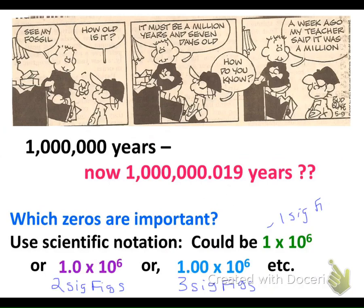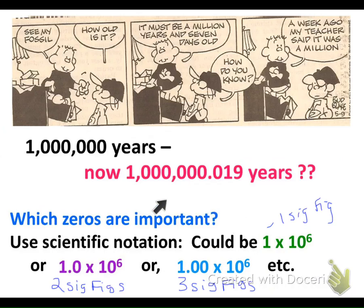If I were to use scientific notation, there are a lot of different ways. One representation would be two significant digits. Another would be considered three significant digits because the decimal point and those zeros are there. And another would be only one significant digit. If I'm just looking at a value and there's no decimal point, I would say that is only one significant digit. So scientific notation is really important.